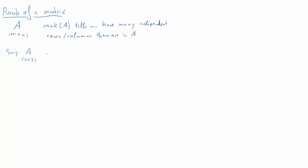By way of example, assume that we have a matrix A which has two rows and three columns, with elements A11, A12 and A13 in row 1, and A21, A22 and A23 in row 2. Let's think about the three columns: the first one we call A1, the second one A2, and the third one A3.